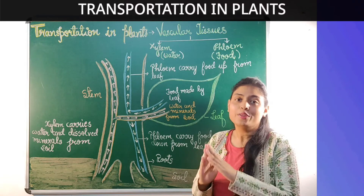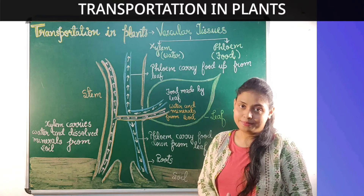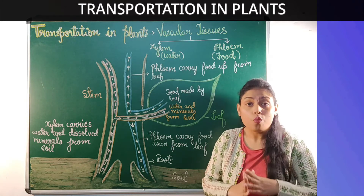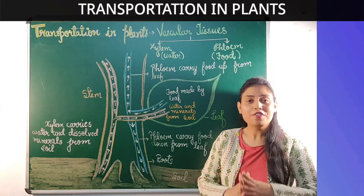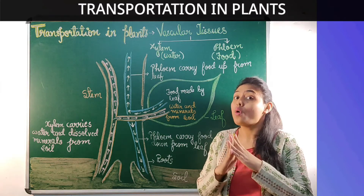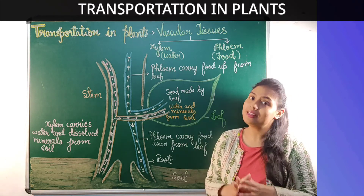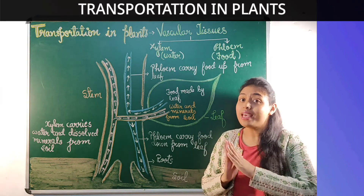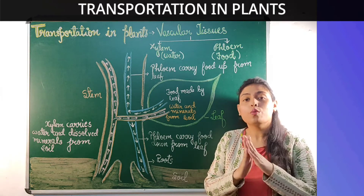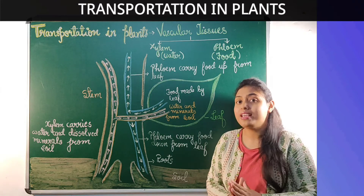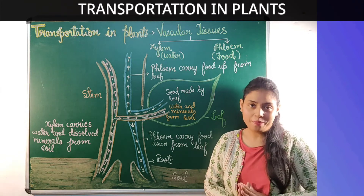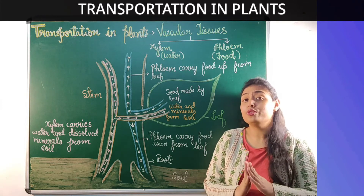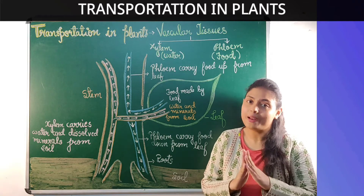Now let us see the uses of water in plants. There are various uses of water by plants. First, plants use water for photosynthesis. Second, when the water is absorbed from the roots, it also carries minerals along with it.